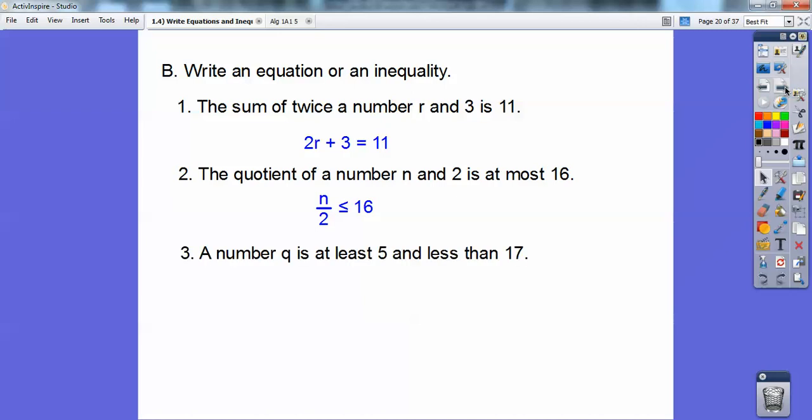A number Q is at least 5, so that would be greater than or equal to, but at the same time, less than 17. So, Q is going to go in the middle, 5 will be on the left. Now, can you see, this says Q is greater than or equal to 5. So, it's pointing away from Q, so 5 is going to be there. So, it's at least 5, but it's less than 17 at the same time.